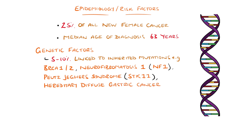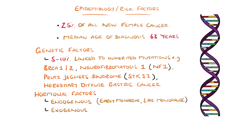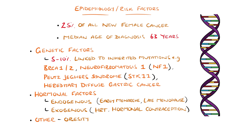Hormonal factors: there is a correlation between increased exposure to levels of endogenous sex hormones — for example, early menarche or late menopause — and risk of breast cancer, as well as exogenous oestrogens and progestin through hormone replacement therapy or contraception. Other risk factors include obesity, with an increased risk of 10% for every 5 BMI points above normal, as well as radiation exposure, alcohol use, and reduced physical activity.